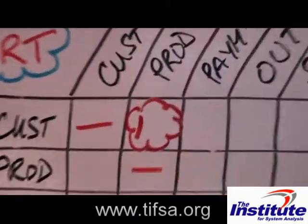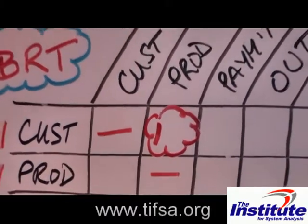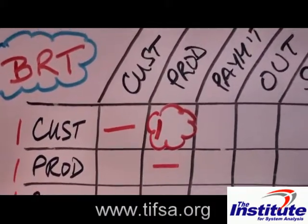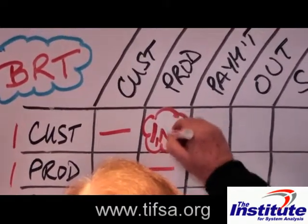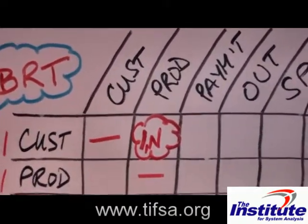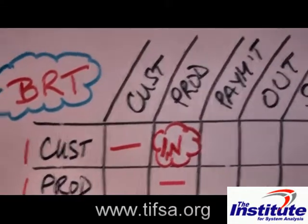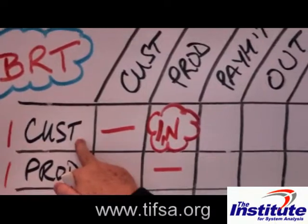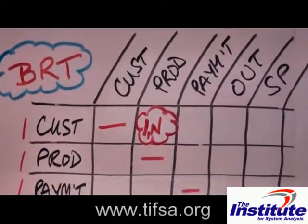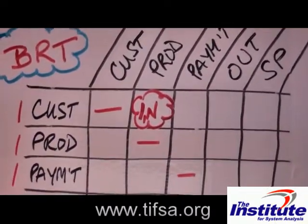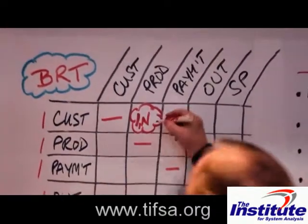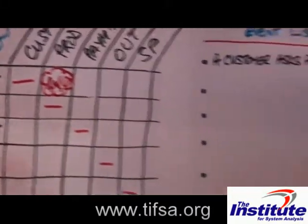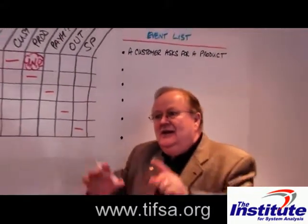Is it possible that we could sell them several products? Sure. So I'm going to put an N there, meaning numerous or many — remember in math classes, N was the variable number. And the last question is: is it possible that we never sell a product to a customer? The answer could be yes, in which case I'll put a zero there — meaning not zero or none, but meaning 'never.'